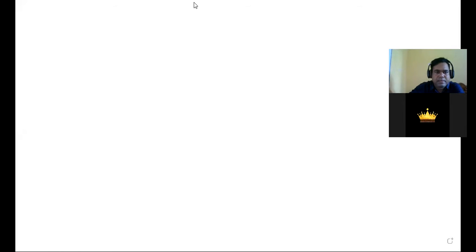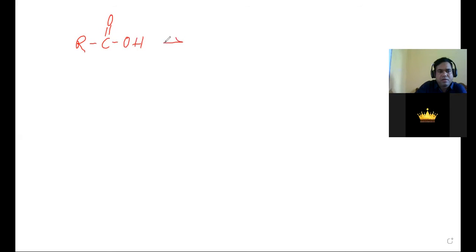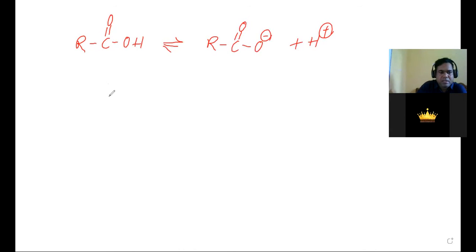Carboxylic acid — why is carboxylic acid acidic in nature? Carboxylic acid gives H⁺ ion: RCOOH gives H⁺ to form the carboxylate ion. This carboxylate ion has two equivalent resonating structures, which is why it is more stable. The carboxylate ion has a trigonal planar structure and is resonance-stabilized.